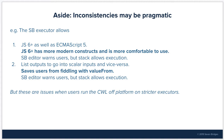The inconsistencies between executors may be pragmatic. For example, the Seven Bridges executor allows people to use JavaScript 6 plus as well as ECMAScript 5. JavaScript 6 has more modern constructs and is more comfortable to use. The Seven Bridges editor warns users about this, but the stack allows execution. In the Seven Bridges executor, outputs that are a list going into a step where the inputs are scalar are allowed, and vice versa. This saves users from having to work with value-from expressions, though it becomes an issue when running the CWL off-platform on stricter executors like CWL tool.